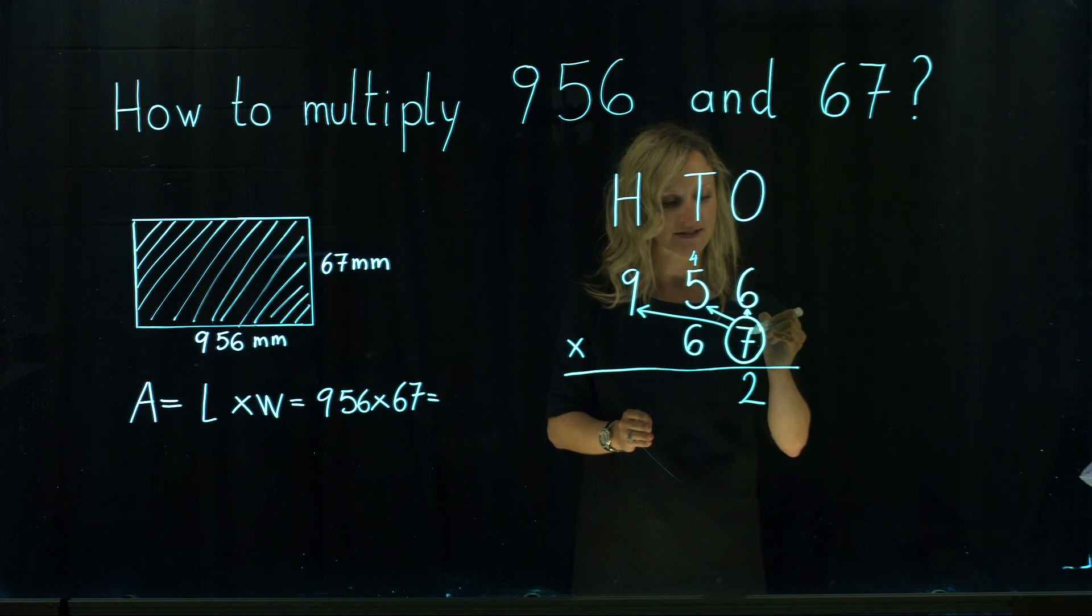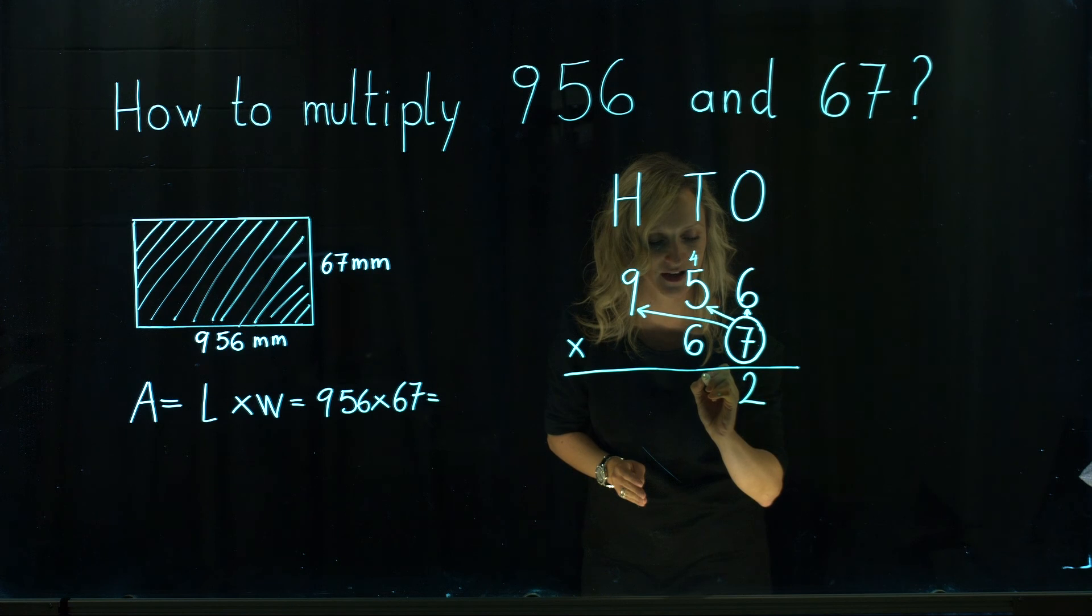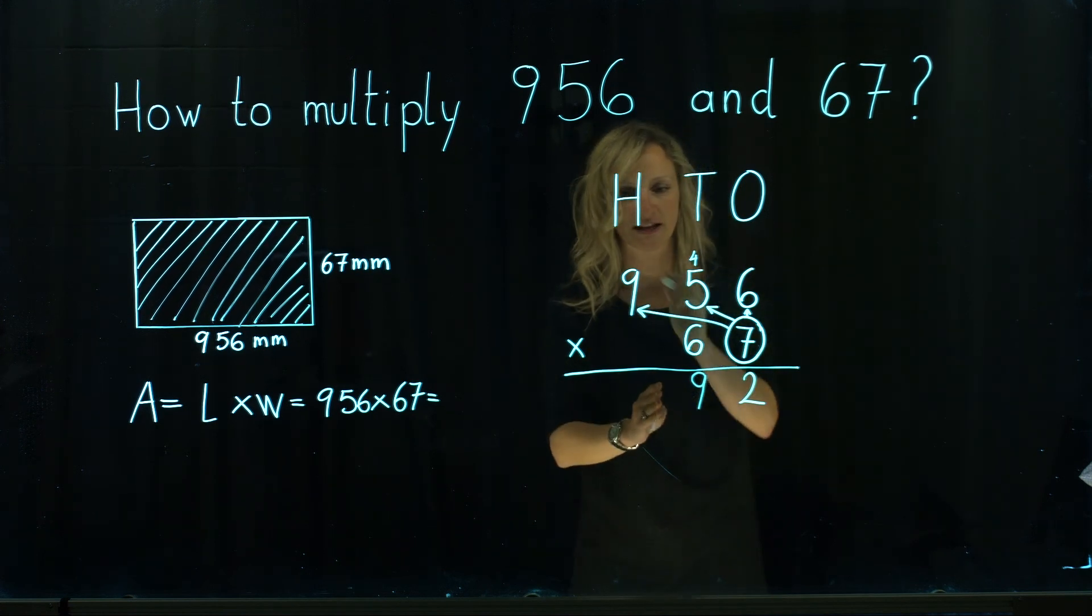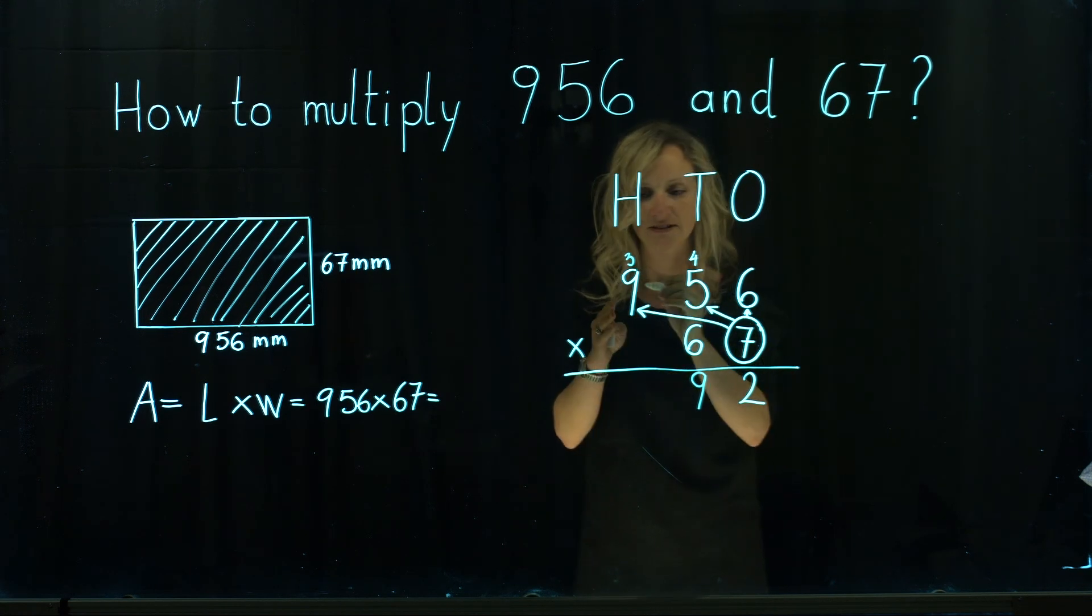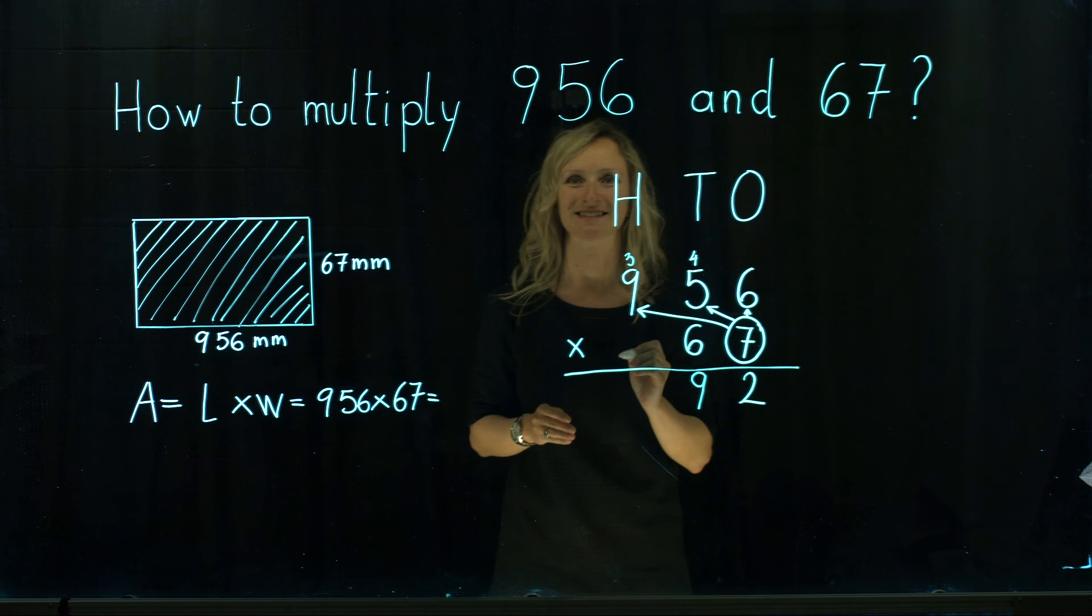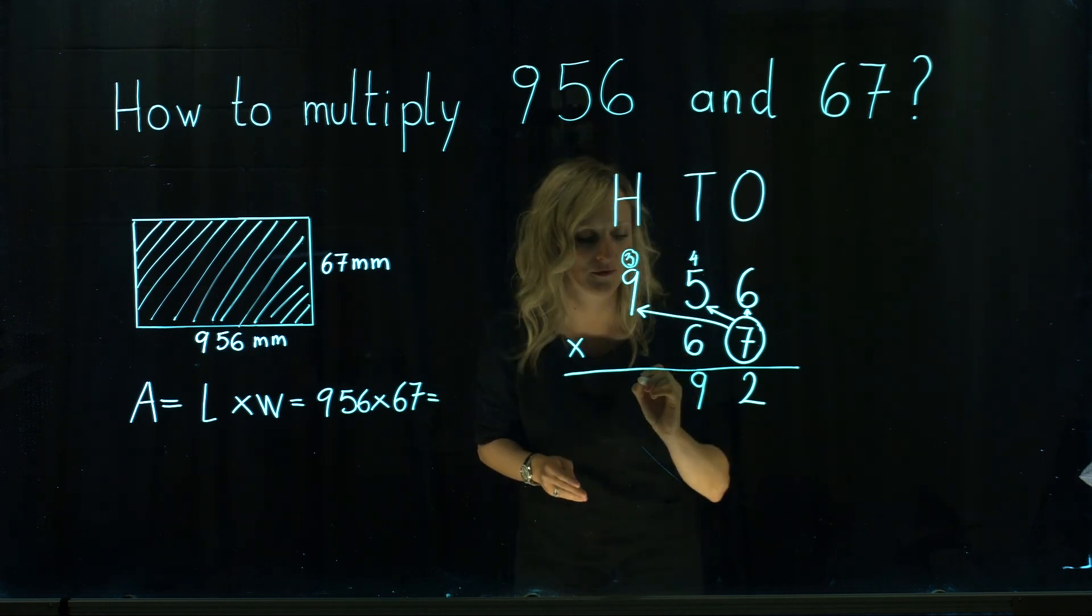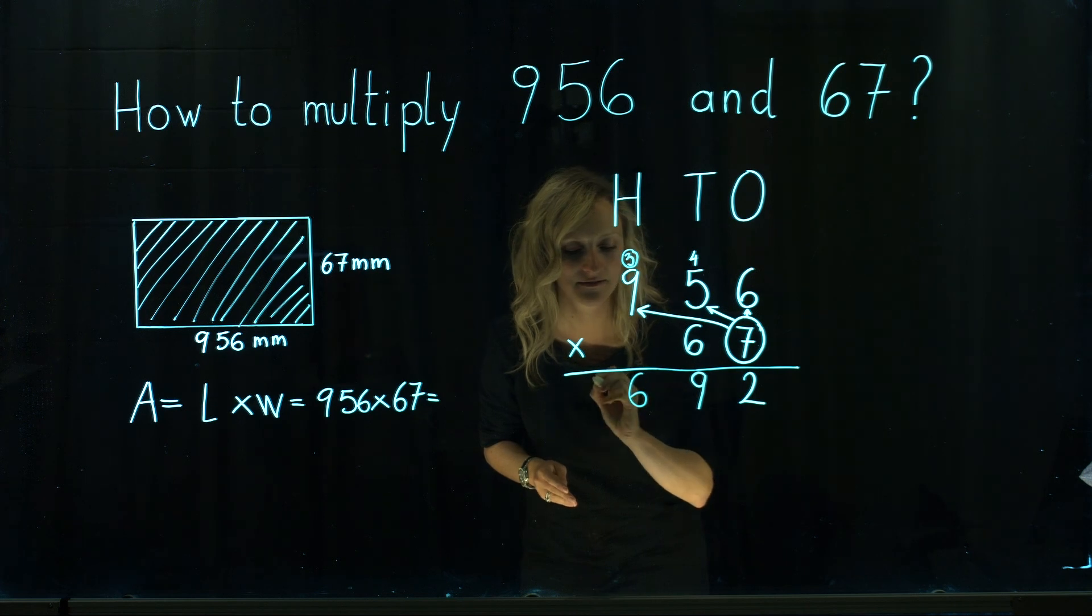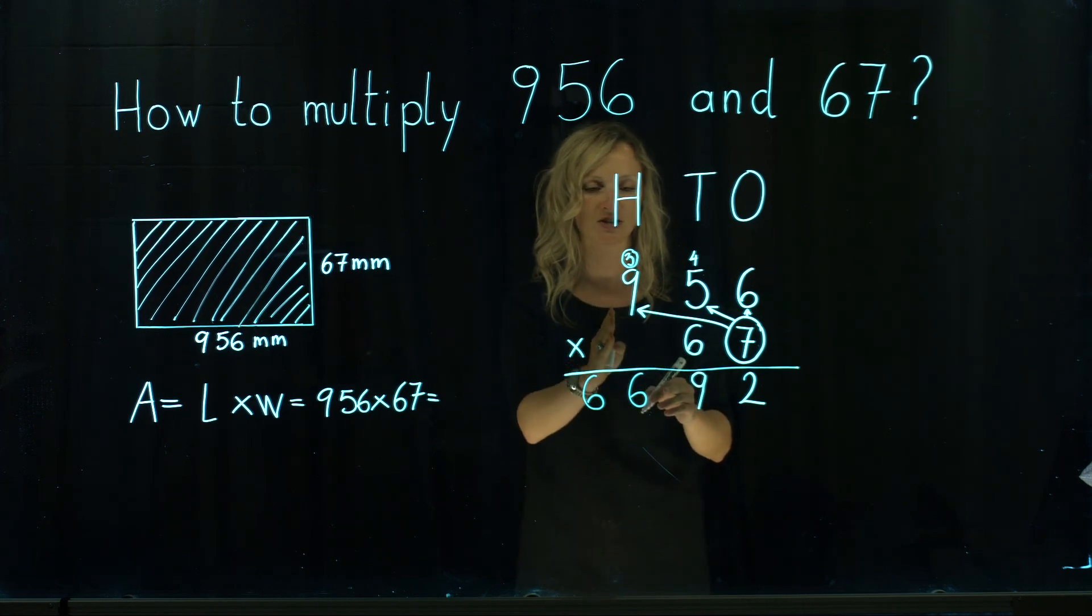After that we go 7 times 5 is 35 plus 4 is 39. 9 goes under the place value of tens. We carry over 3. We continue with 7 times 9 is 63 plus extra 3. We've got 66.